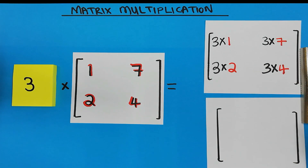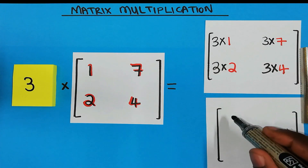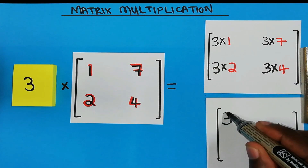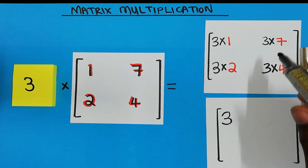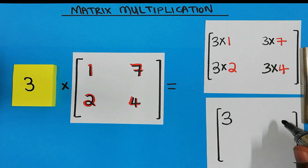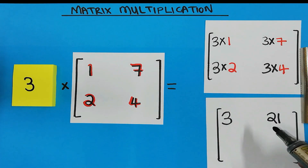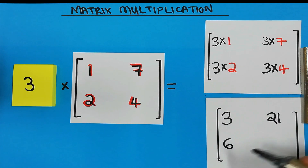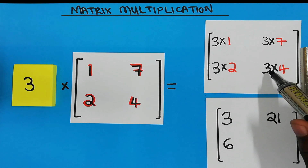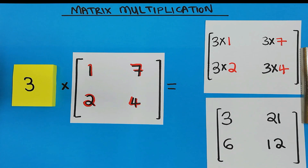Now let's do the arithmetic: 3 multiplied by 1 equals 3; 3 multiplied by 7 equals 21; 3 multiplied by 2 equals 6; and 3 multiplied by 4 equals 12. That is how you go about scalar multiplication.